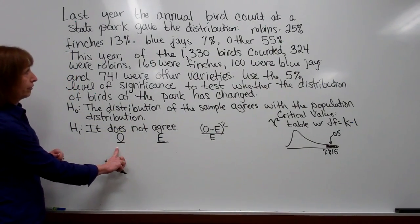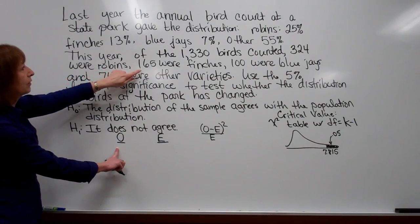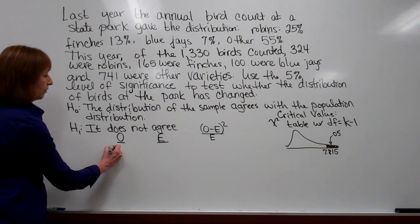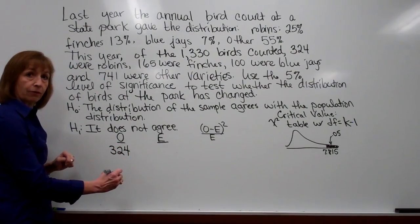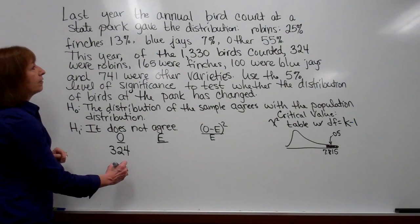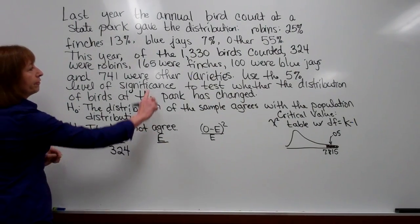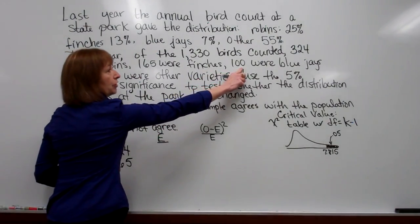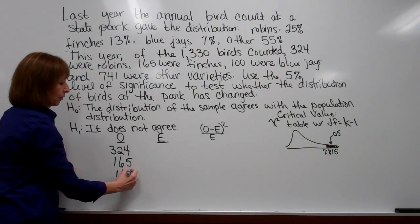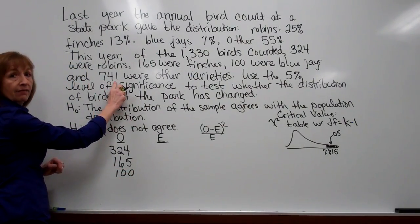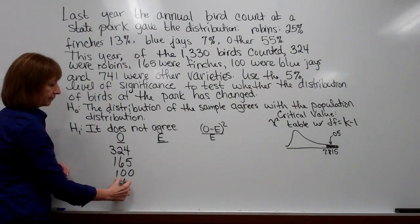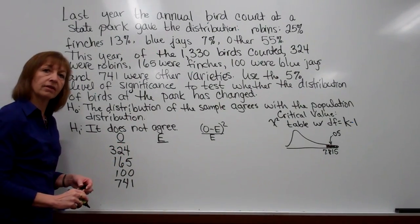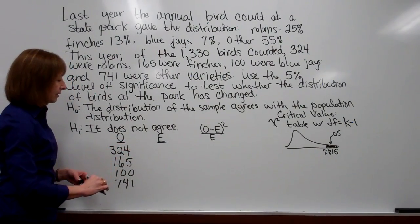So first for observed with the robins, they observed that there were 324 robins. For the finches we had 165 observed. For the blue jays they saw 100 blue jays when they did their sample. And then 741 were other varieties. So those are all our observed values, and O is just the first letter observed, so that's what they use for the symbols to denote it.